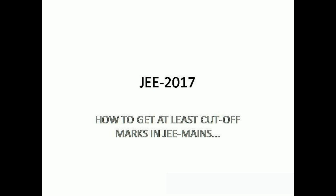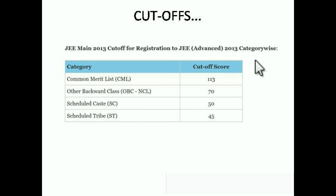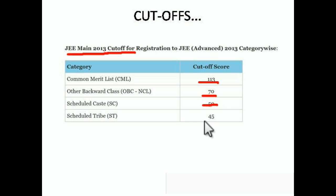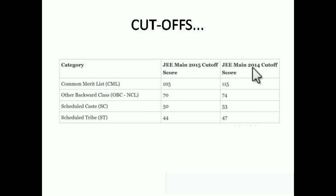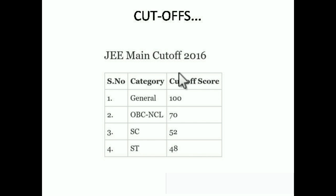Let's see how the cutoff marks have looked in past years of JEE Mains. In 2013, the cutoff score for General category was 113, for OBC it was 70, SC was 50, and ST was 45. In 2014, the General category cutoff was 115, and in 2015 it was 105. Similarly, OBC, SC, and ST cutoff scores are shown. For JEE 2016, the General category cutoff was 100.